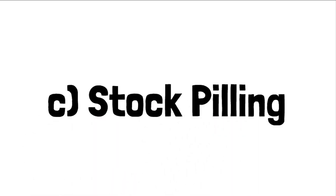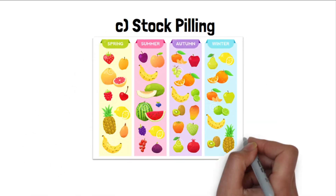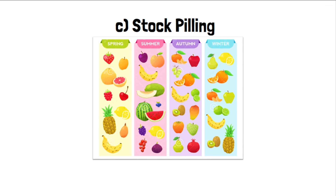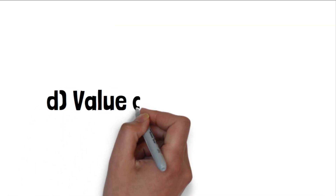The third function is stockpiling — storing seasonal goods for later use. For example, a company may need a raw material like mango, which is not available year-round. If you want to manufacture mango products in November or December, you cannot get that seasonal fruit then. So you pile the stock — storing goods when they are available at a cheaper rate — for your production and manufacture. That is stockpiling.